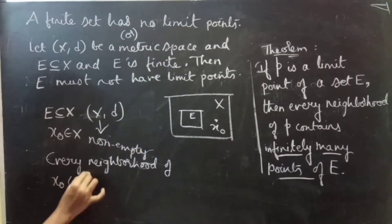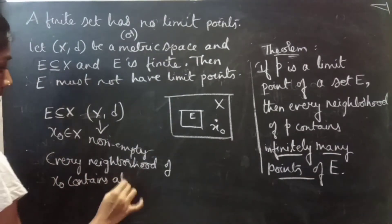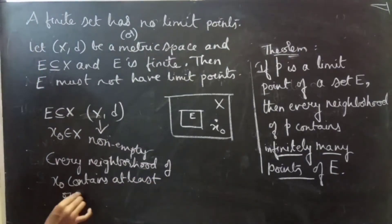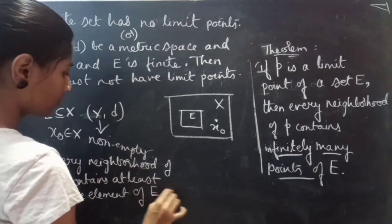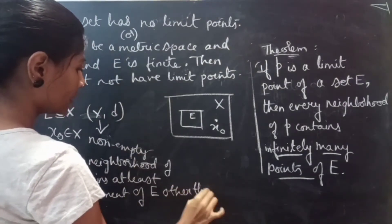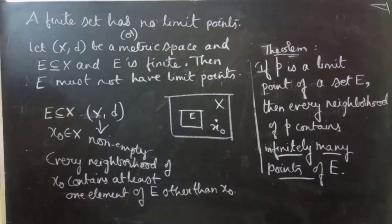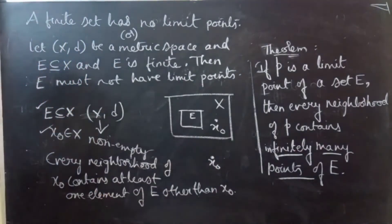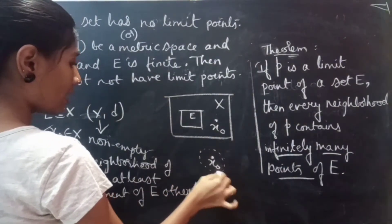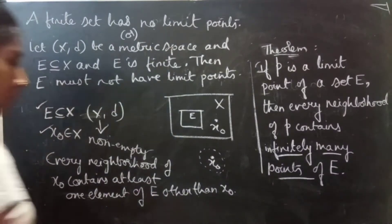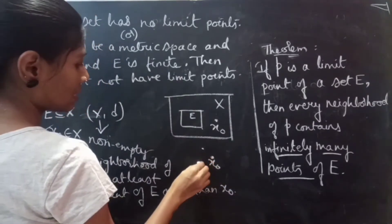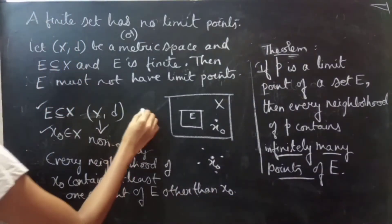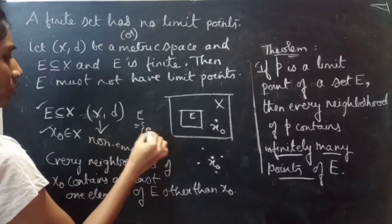If every neighborhood of X-naught contains at least one element of E other than X-naught, then we say that X-naught is a limit point of E. Here, X-naught is the point and these are its neighborhoods — a neighborhood is nothing but some set of points.